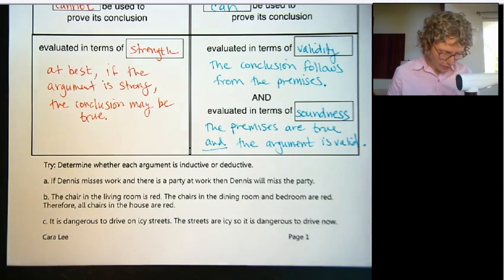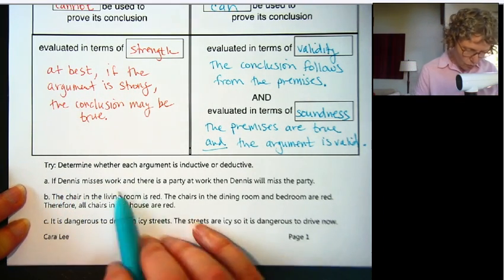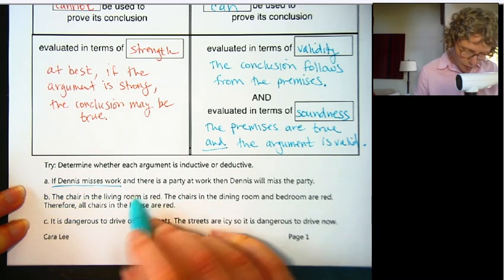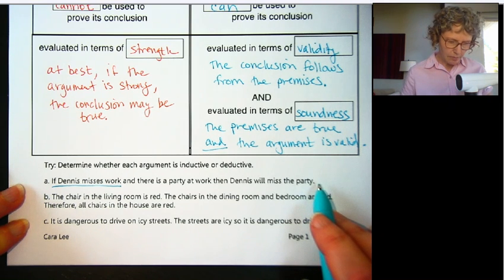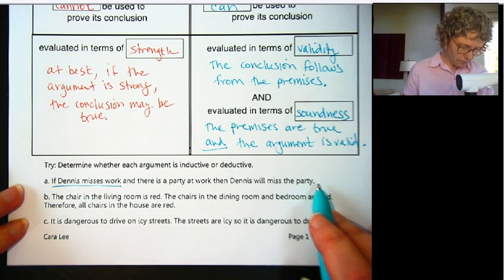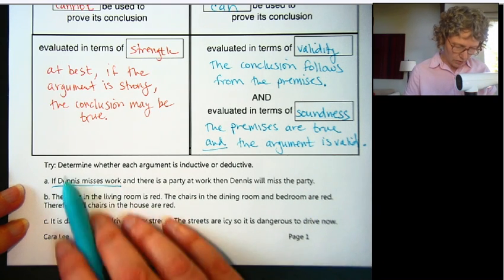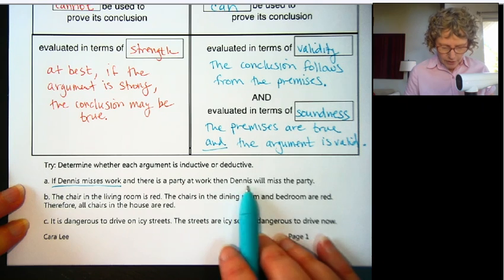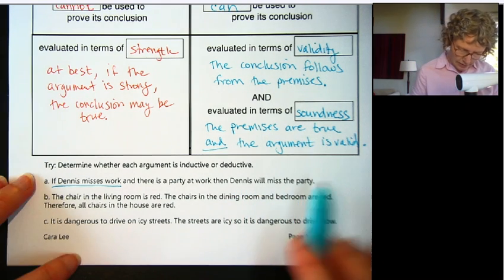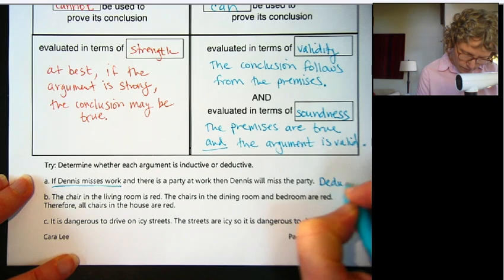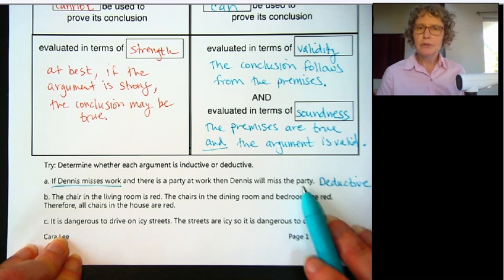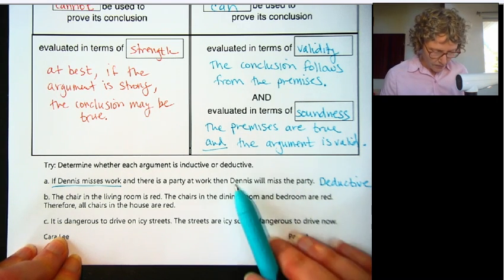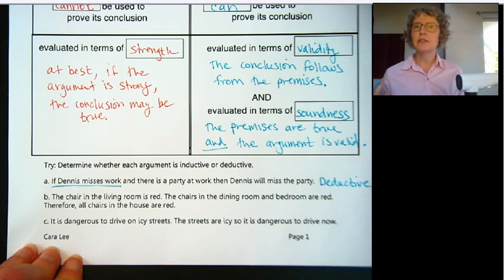Okay, let's go through each one. If Dennis misses work and there's a party at work, then Dennis will miss the party. Is this going from general to specific or specific to general? If Dennis misses work — that's general — and there's a party at work, then very specifically Dennis will miss the party. So this is deductive. You can conclude that this is true: Dennis will miss the party.